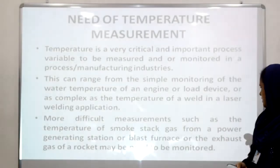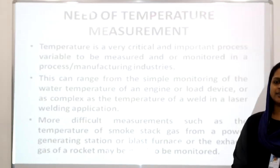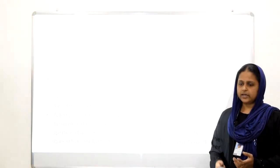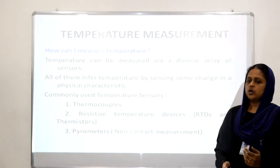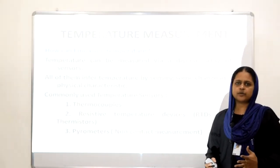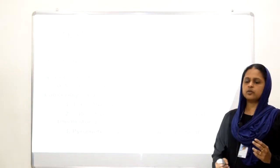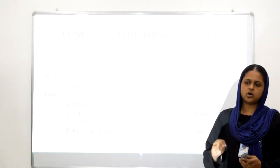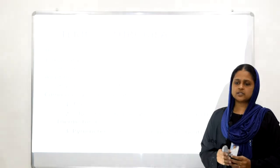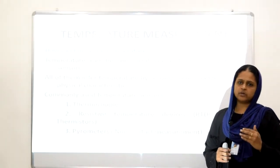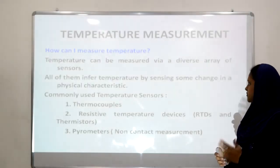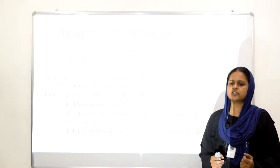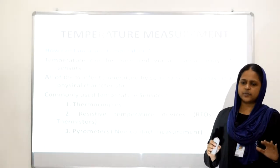More difficult measurements include the temperature of smoke gas from power generating stations, blast furnaces, exhaust gas, or in rockets. All of these represent areas where temperature measurement is needed. To measure temperature, we need to use sensors. For example, in normal day-to-day life, if I touch a hot surface, I can feel the temperature because my skin acts as a sensor. Similarly, we measure temperature using an array of sensors, which infer temperature by sensing some change in physical characteristics.